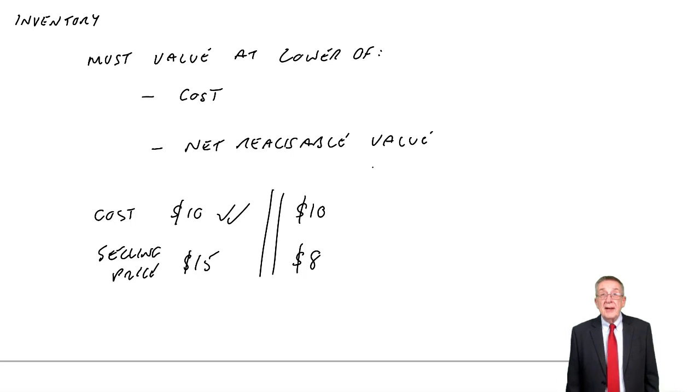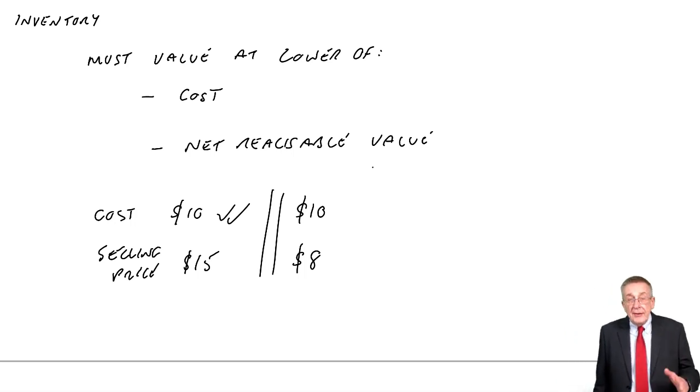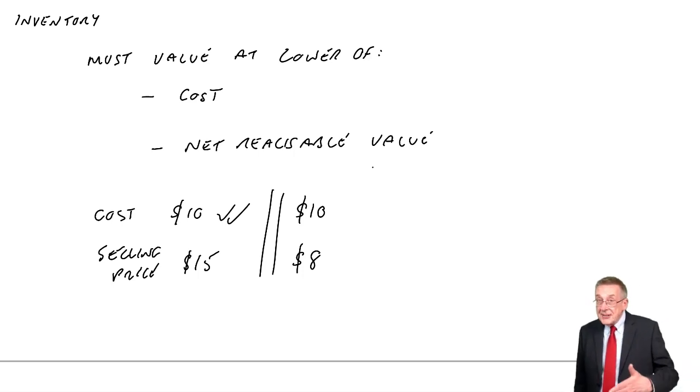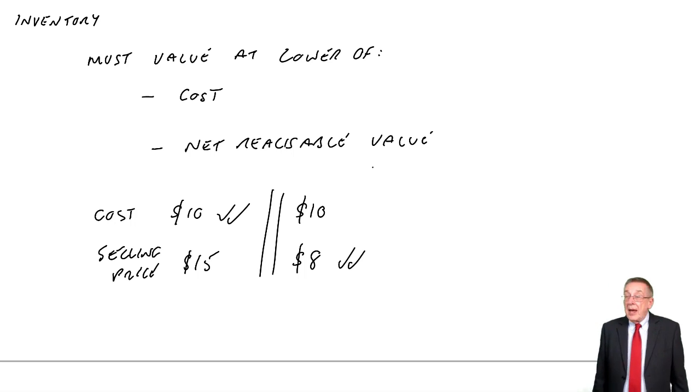Although hopefully that doesn't happen very often, but if ever there's an item where you expect you'll be selling it for less than cost, you must value it at the lower, which in that case would be $8. We haven't sold it yet, so we haven't yet lost any money. But as soon as you see that you think you are going to lose money, effectively, we take account of it. You must value each item at the lower of cost and net realizable value.